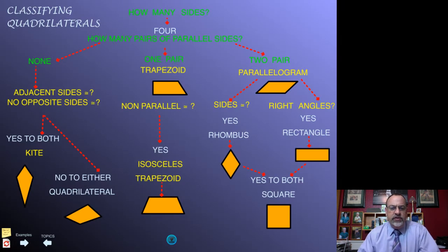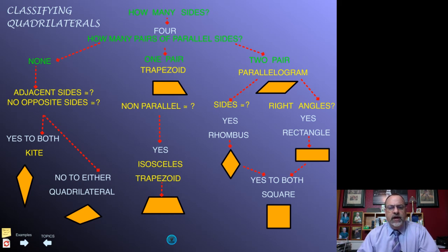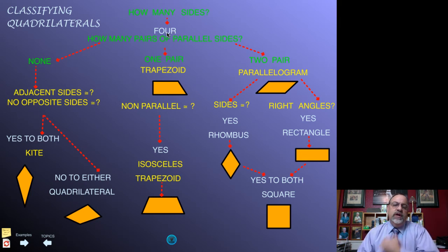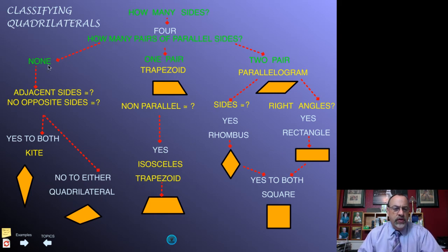I've put together a flowchart that should help you see how you can work through the questions and come to the classification for these quadrilaterals. We begin at the top: the first question is how many sides does it have, and if the answer is four, we have a quadrilateral. We then ask how many pairs of parallel sides are there. If there are no pairs of opposite sides that are parallel, we ask a couple more questions to define it either as a kite or simply a quadrilateral.